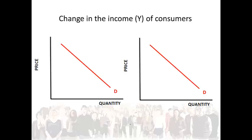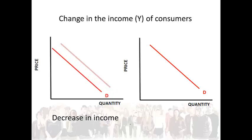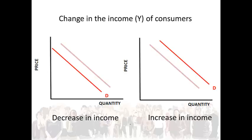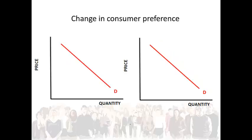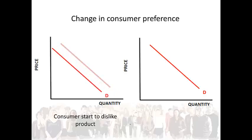A fall in income of consumers will result in a decrease in demand for a product, as consumers will buy less of it. An increase in income will result in an increase in the demand for a product, provided that the product is a normal good. For inferior goods, demand will decrease if income increases. This will cause a shift in the demand curve — meaning a change in demand. A change in consumer preference due to factors such as advertising or fashion will cause an increase or decrease in demand. If a consumer starts to dislike a product — like realizing that smoking or sugary foods are unhealthy — they will try to use less of it, causing a shift in the demand curve.